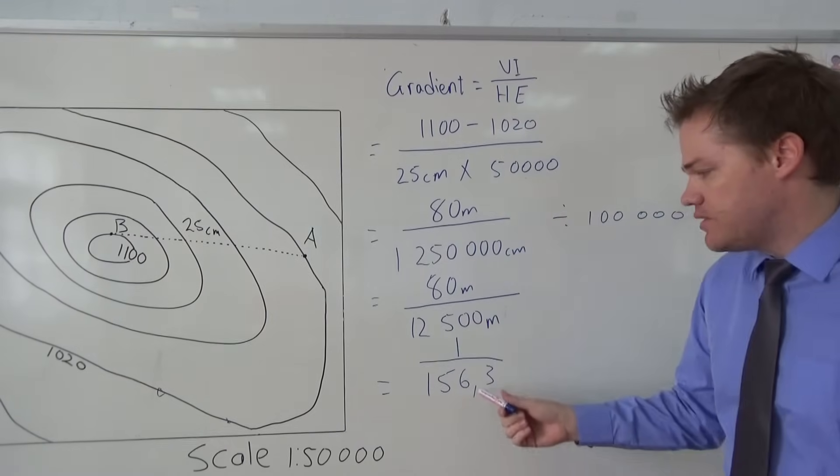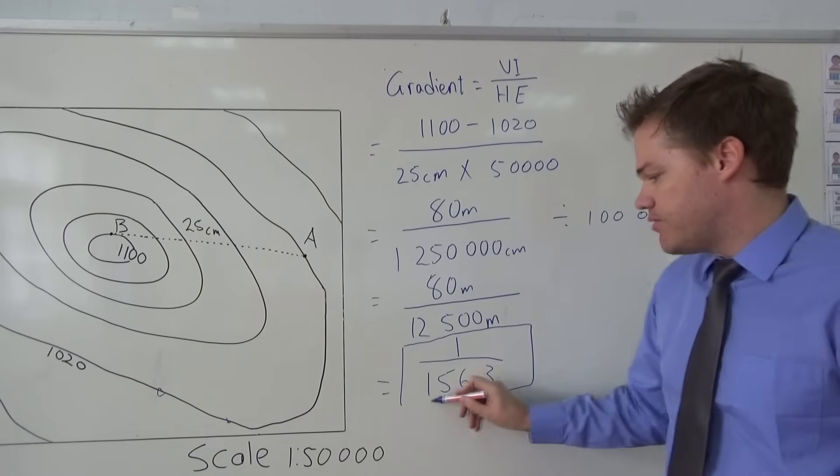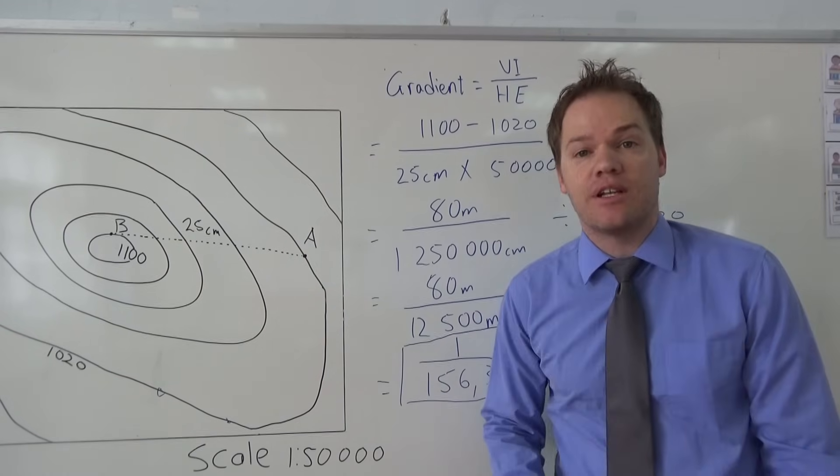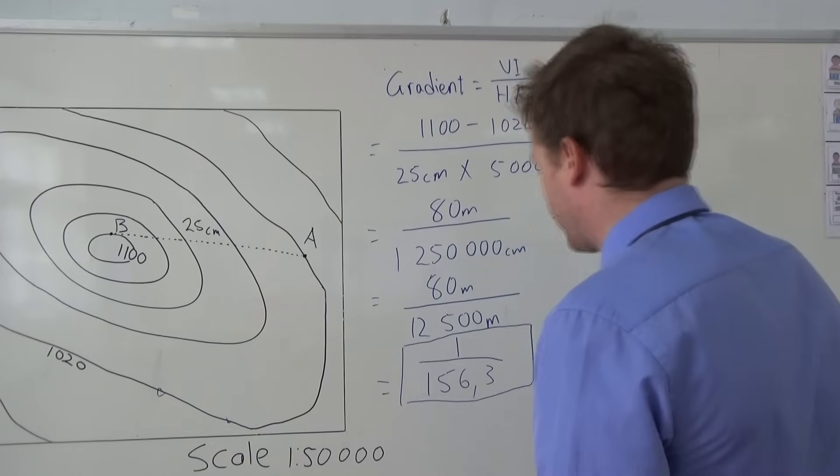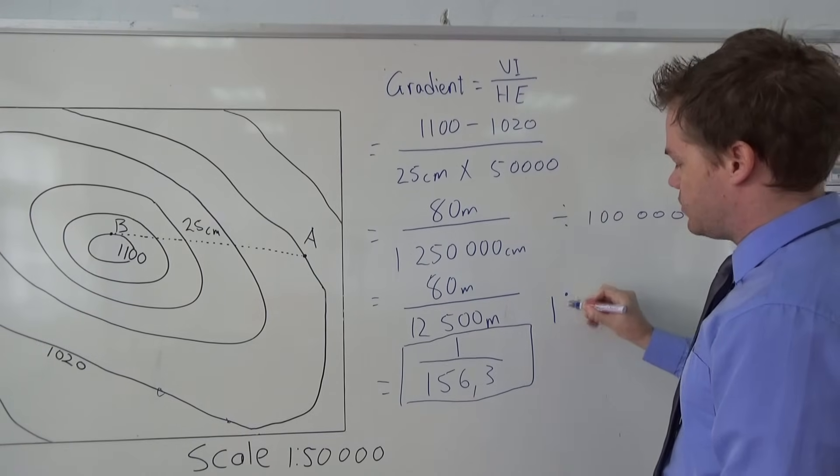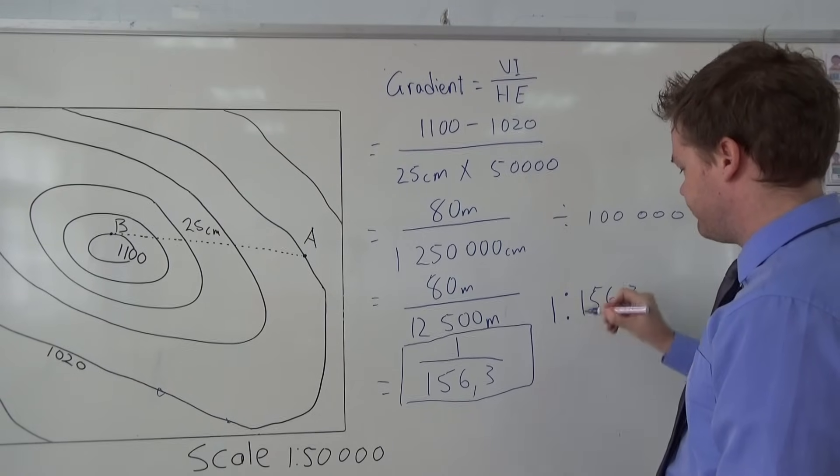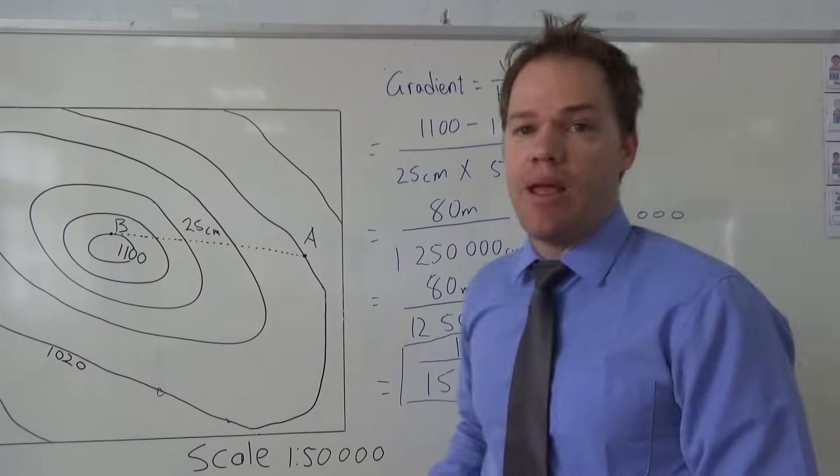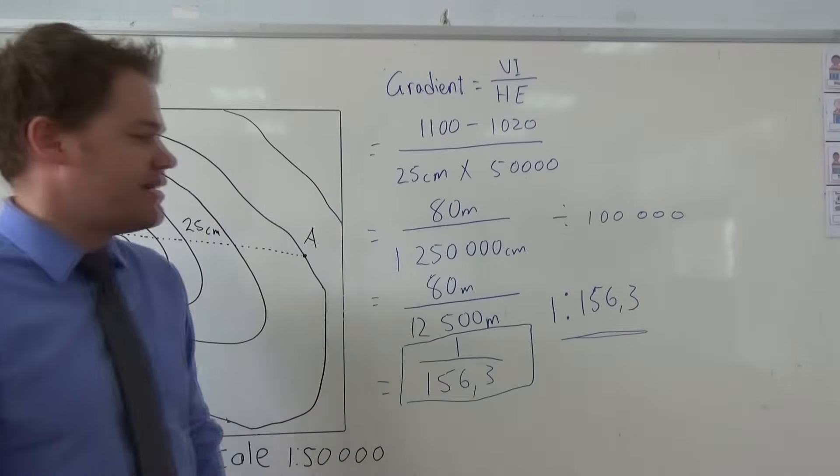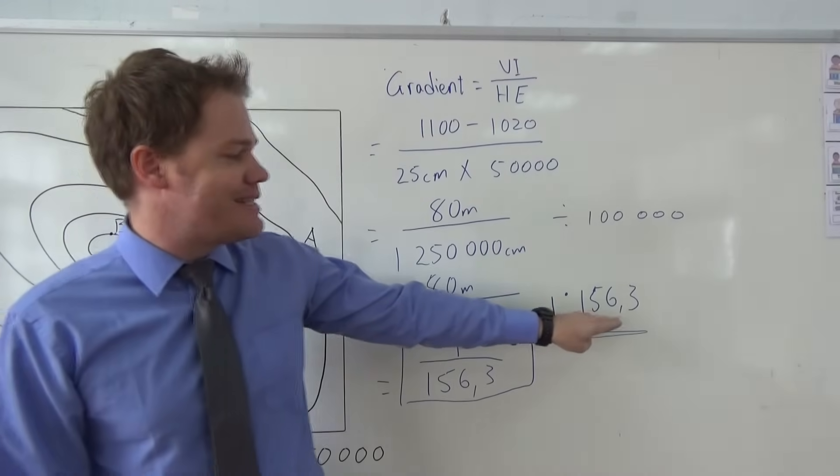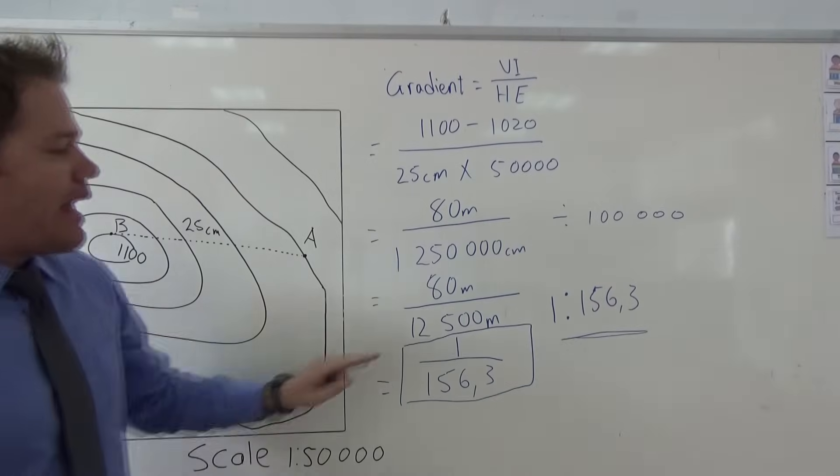Now some of you might say, but this doesn't make any sense—you can't write a fraction like this. And it's absolutely correct, you can't write fractions like this, but this isn't a fraction, this is a ratio. This has nothing to do with maths or fractions or anything like that. So this is how we are going to write it: it's 1 to 156.3. Now some of you will remember what this ratio is telling us. It tells us that for every 156.3 meters that we travel from point A to point B, there will be an increase in height of one meter.